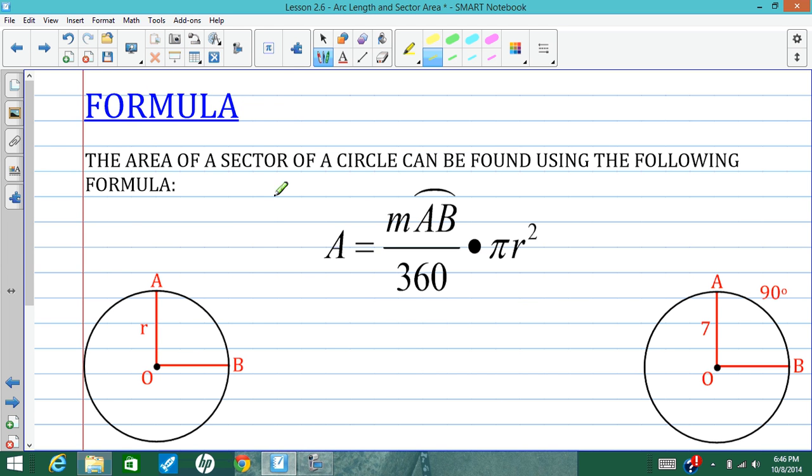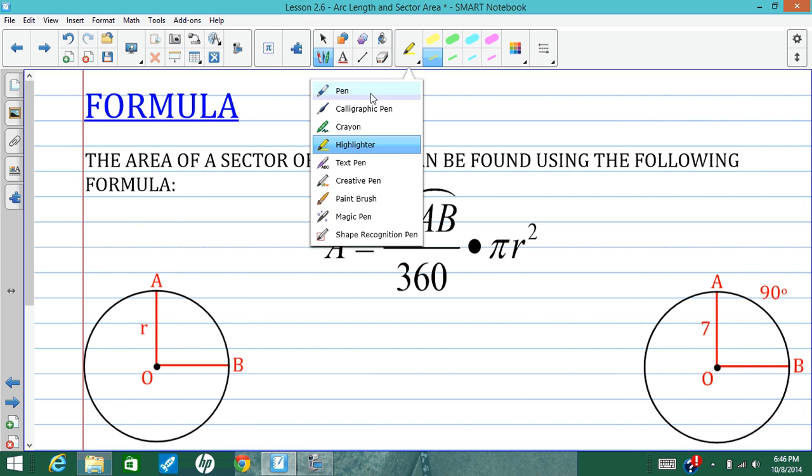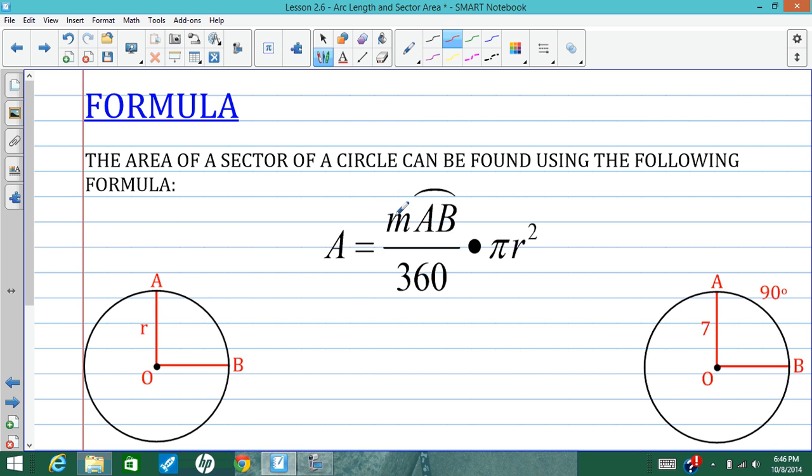And we can find the area of a sector by using this formula. Up top here is the measure of arc AB. So we're over here looking at this circle. There's arc AB. If we know the measure of that in degrees, that goes up top. So I'm just going to go over this arc in purple, point to it in purple. We divide that by 360. So like I said, a sector is a fraction of a circle. So this is the fraction of the circle that the sector makes up. It's the amount of degrees of the arc over the total circle, 360. And then we multiply that by the area of the circle.